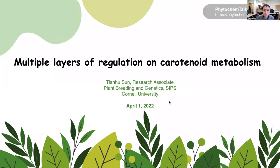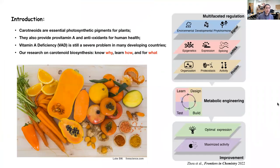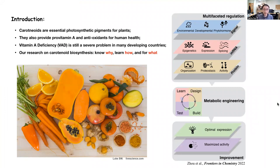Today I will talk about multiple layers of regulation on carotenoid metabolism. Carotenoids are essential photosynthetic pigments for plants and they also provide vitamin A and serve as excellent antioxidants for human health.